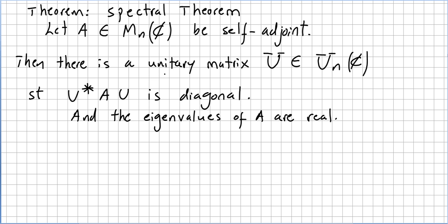We finish these revisions of linear algebra with this very important theorem, what we call the spectral theorem. Let A be a matrix in the space of n by n matrices. Let A be self-adjoint. Then there is a unitary matrix U from the space of unitary n by n matrices with entries in the complex numbers, such that U* A U is diagonal.